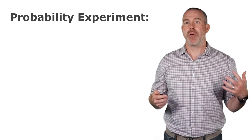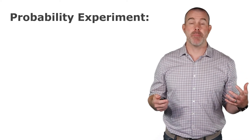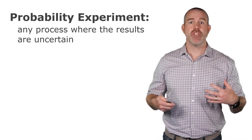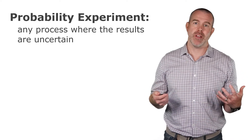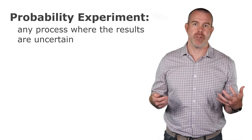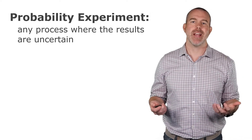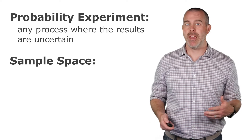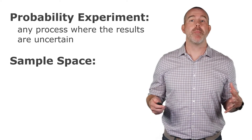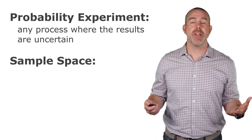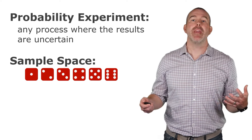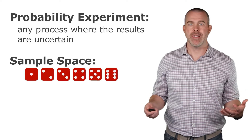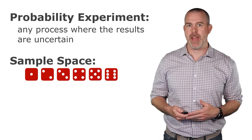We're going to start this video by talking about some vocabulary. First is a probability experiment — in this context, that's any process where the results are uncertain. So like we roll a six-sided die, the results are uncertain. The sample space is all the possible outcomes. With our example of the six-sided die, that would be all the different six sides of the die.